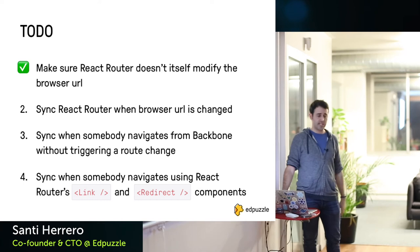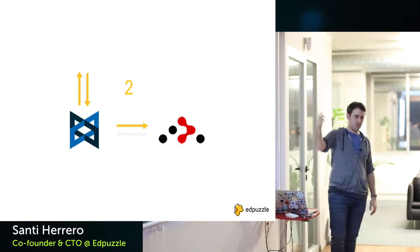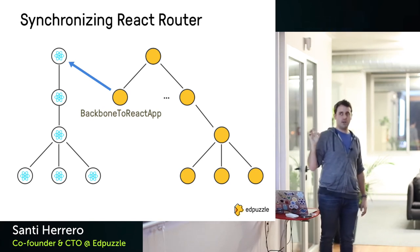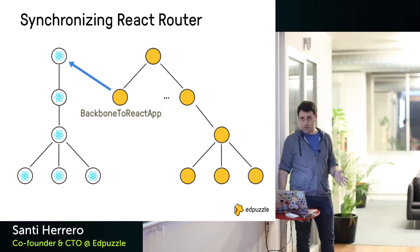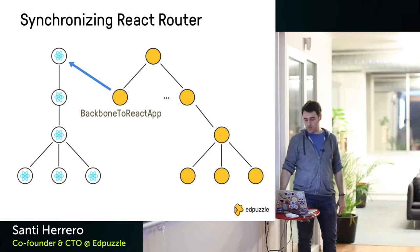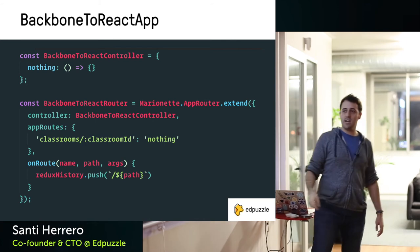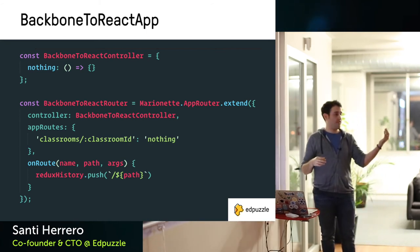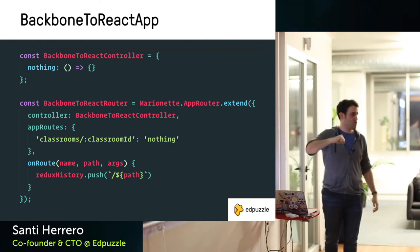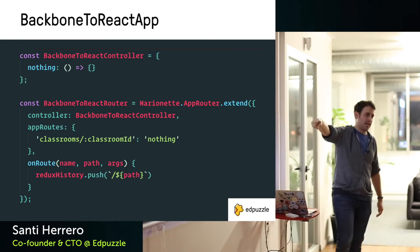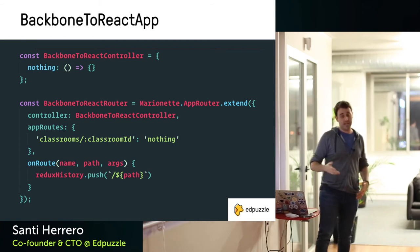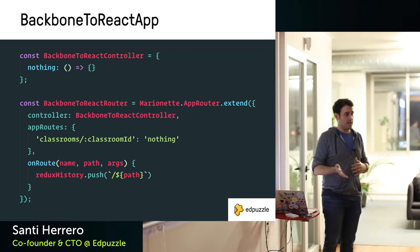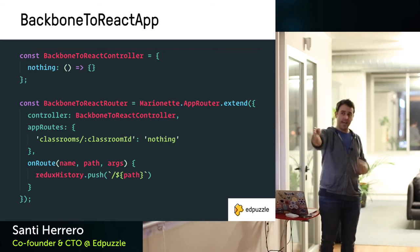Step two: how do you tell React Router to synchronize when Backbone navigates? You need a node in the middle responsible for this communication. In Marionette there's an `onRoute` method that gets called every time a router is hit. You just keep a reference to the memory history from React and push the path — that's it. Any time any route in any Backbone sub-application is hit, `onRoute` is called, you push to React Router's history, and it checks if there's a matching React route. If there's a match, you do nothing — you don't instantiate any Backbone view.